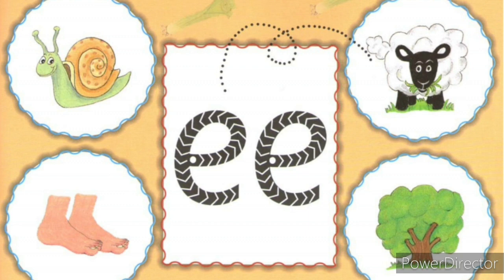They have asked you to match the pictures which have the 'ee' sound in them. Look at the first picture children. This is a sheep. Does the word 'sheep' have the long 'ee' sound in it? Yes, it does. So let us match 'sheep' to 'ee'.